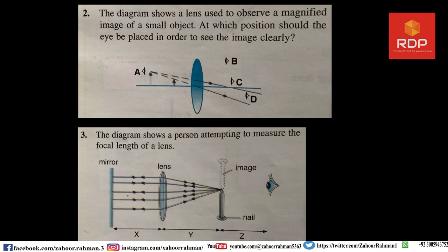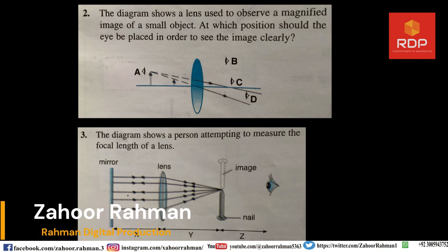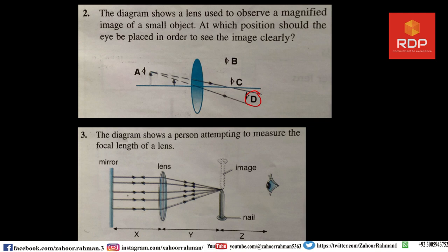The second MCQ: the diagram shows a lens used to observe a magnified image of a small object. At which position should the eye be placed to see the image clearly? Without hesitation, the answer is position D. We discussed this scenario in the last lecture. To see a virtual image on the side of the object, you have to put your eye at position D — not A, B, or C.